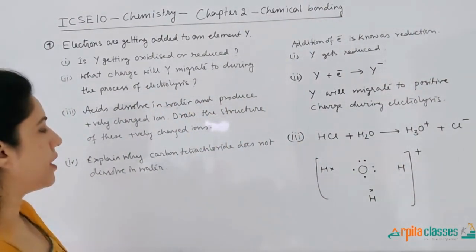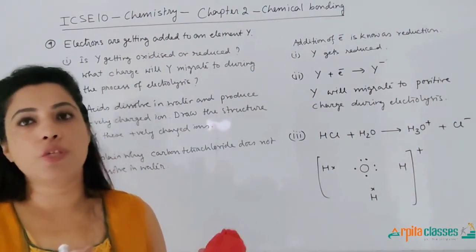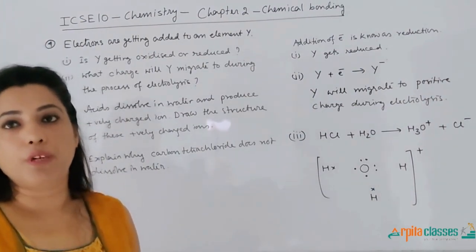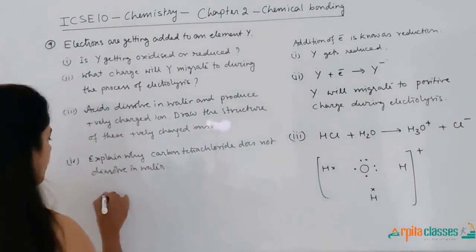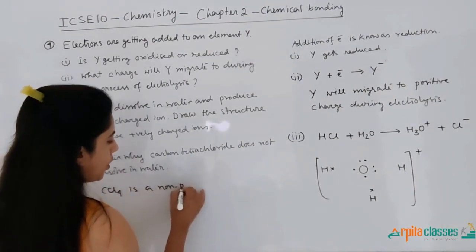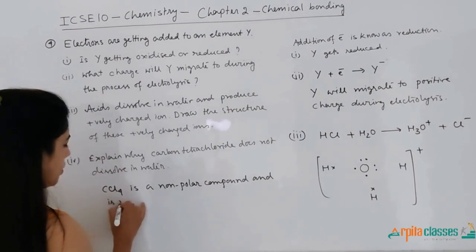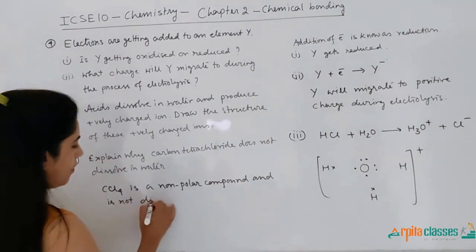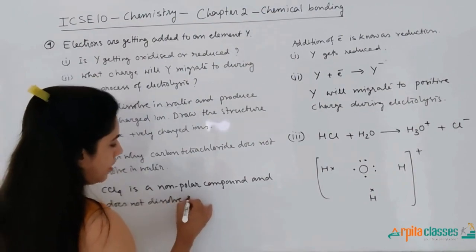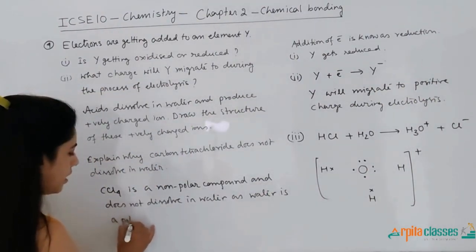Explain why carbon tetrachloride does not dissolve in water. Carbon tetrachloride is a non-polar compound, and we know that polar compounds dissolve in polar solvents while non-polar compounds dissolve in non-polar solvents. Water being a polar solvent will not be able to dissolve carbon tetrachloride. So CCl₄ is a non-polar compound and does not dissolve in water as water is a polar solvent.